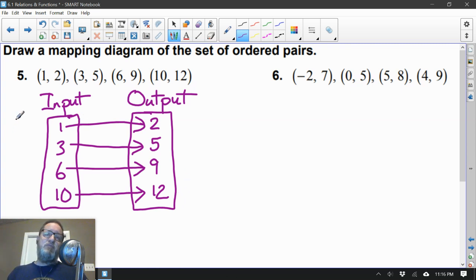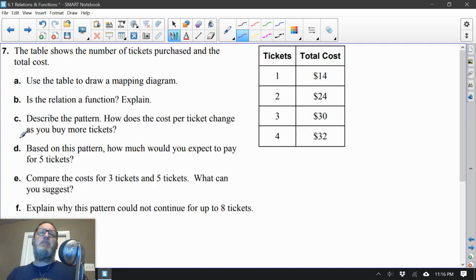So in the last problem, we took the mapping diagram and turned it into ordered pairs, and this just reverses that. And finally, number 7. This one has several parts. Let's get through this. Use the table to draw a mapping diagram.